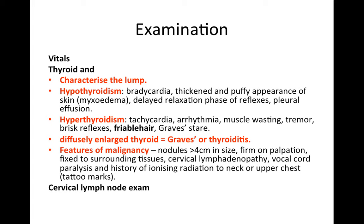For hyperthyroidism, signs include tachycardia, arrhythmia, muscle wasting, tremor, brisk reflexes, friable hair, and Graves' stare. If there is a diffusely enlarged thyroid, consider Graves' disease or thyroiditis. Features of malignancy include nodules greater than 4cm, firm on palpation, fixed to surrounding tissues, cervical lymphadenopathy, vocal cord paralysis, and history of ionising radiation to the neck or upper chest.